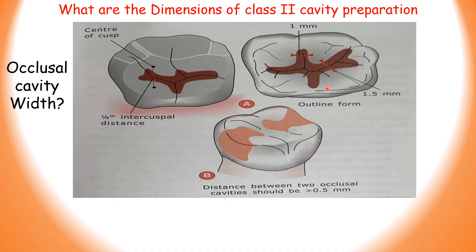Another popular question: if there are two occlusal cavities on a tooth, what should be the minimum sound tooth structure present between them? The answer is greater than 0.5mm. If the distance is less than 0.5mm, you join the two cavities and make a single cavity preparation.